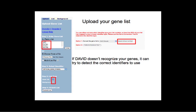It's important to select the correct list type — gene list versus background list. You can upload a background gene list separately. David will ask you to select an identifier. In this case, the gene names are official Hugo gene symbols, so I can choose 'official gene symbol.' If you don't know your identifier, you can select 'don't know' and DAVID will try to detect the correct identifier. However, if you let DAVID guess, it converts everything to its own internal identifier, and when you download results, you get the DAVID internal identifier rather than your original identifiers.